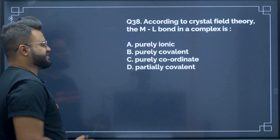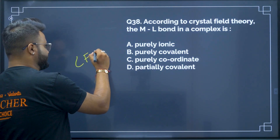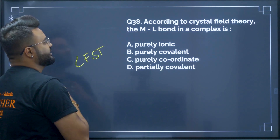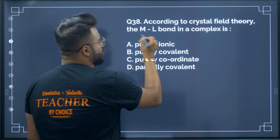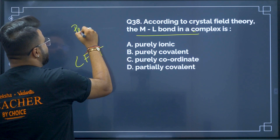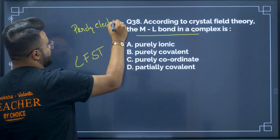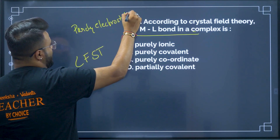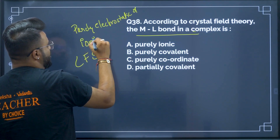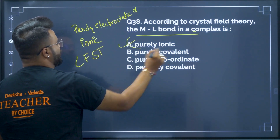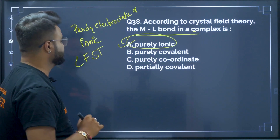Question number 38: according to the crystal field splitting theory, the metal–ligand bond of the complex is purely electrostatic or ionic. Therefore, among the options given, ionic — option A — will be your correct answer, that is purely ionic.